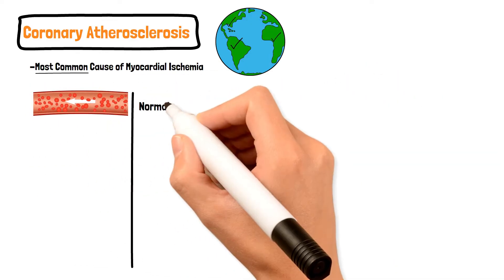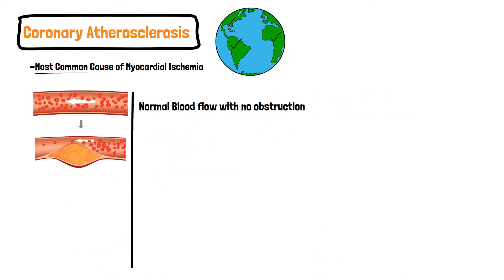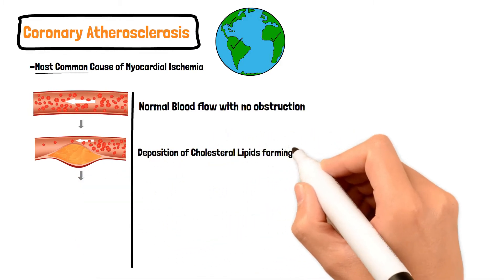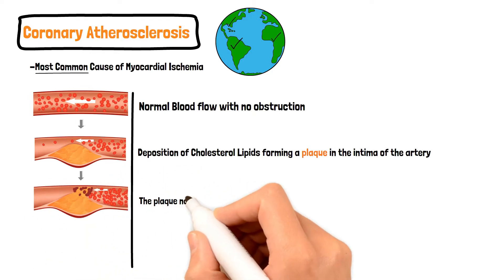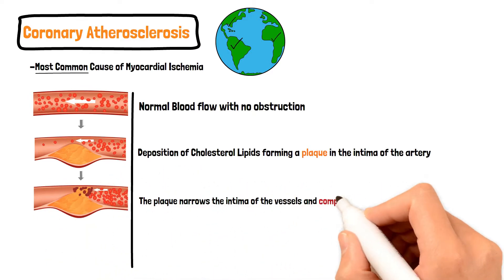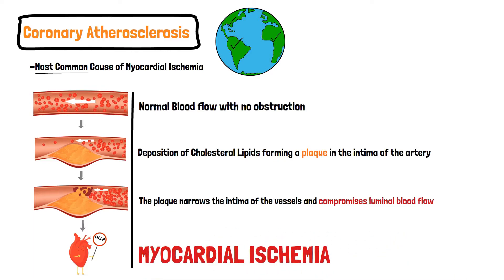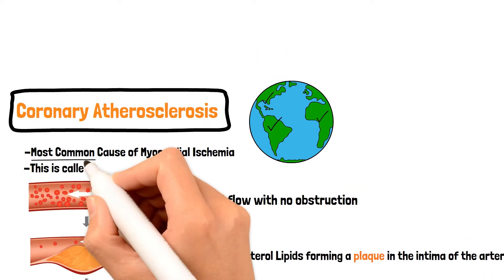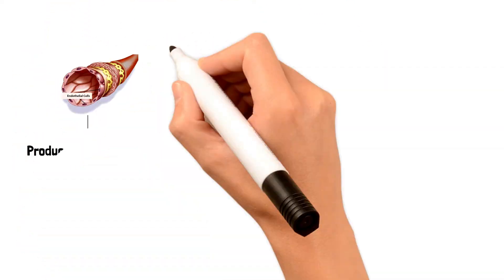Atherosclerosis is a condition in which a plaque of cholesterol and lipids deposits in the intima, or inner wall, of the coronary artery. This leads to narrowing of the intima of vessels and compromising luminal blood flow, ultimately resulting in myocardial ischemia. This is called coronary artery disease.